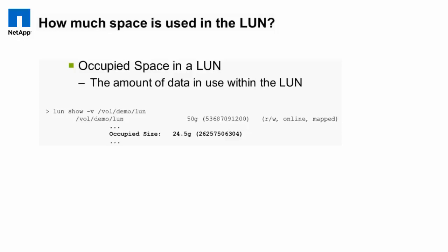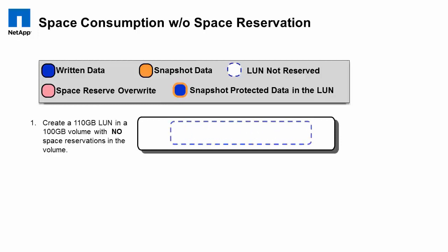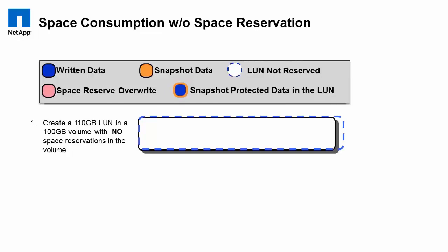But again, prior to ONTAP 8.0.1, there's no way built into ONTAP to see the occupied size. So let's do some examples without space reservation on the LUN. Remember, in the layers of abstraction, we're all the way up at the top — we're talking about the LUN, not the volume. One of the purposes of LUN reservation was to reserve the size of the LUN in the file system at time of creation. With that turned off, you can actually create a LUN that's larger than your volume. In this example, we've created a 110-gigabyte LUN in a 100-gigabyte volume with no space reservation.